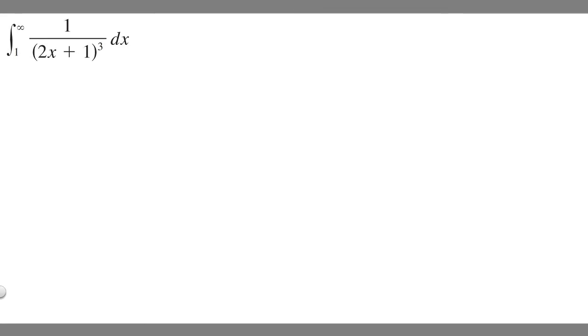In this problem, we're told to evaluate the improper integral from 1 to infinity of 1 over 2x plus 1 cubed dx. In order to solve an improper integral like this, what you're going to do is rewrite it as a limit.